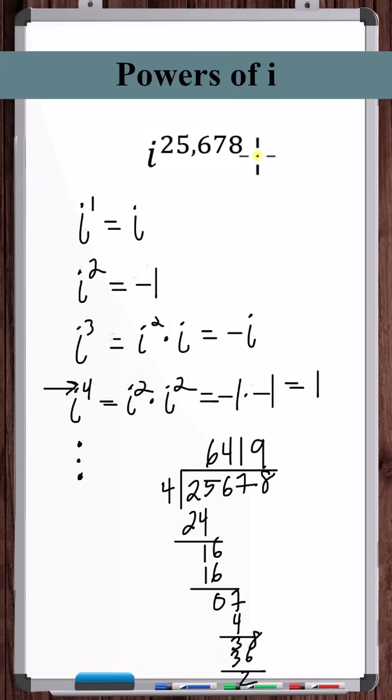What that tells us is that we can write this as i to the 25,676 power times i squared, right? This equality holds - complex numbers, imaginary numbers, obey properties of numbers in general, including these exponent properties.